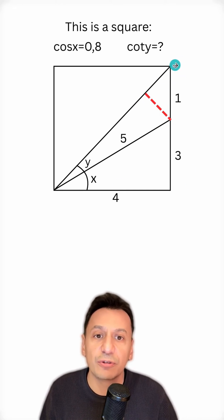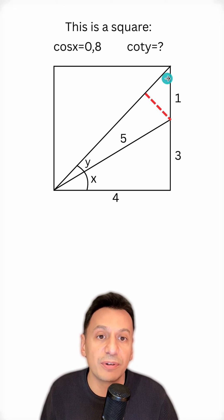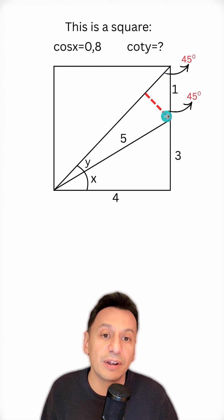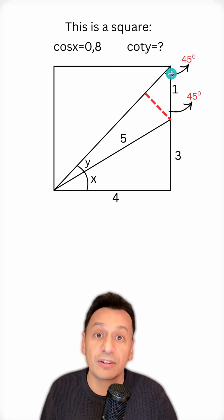Here a right isosceles triangle has formed. And if this angle is 90 degrees, then the other angles here must also be 45 degrees. So, this angle here is 45 degrees, and since I drew a perpendicular, the angle here will also be 45 degrees. In other words, there is a right isosceles triangle here.